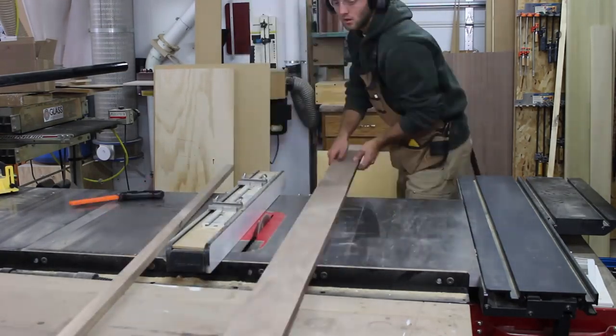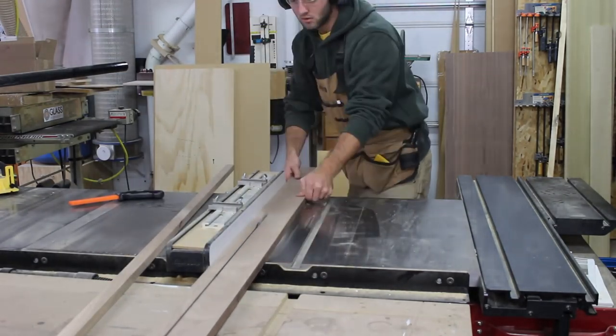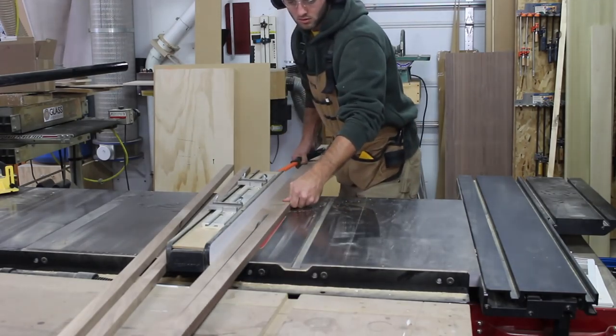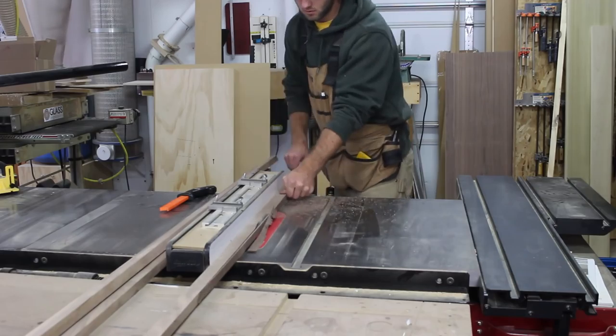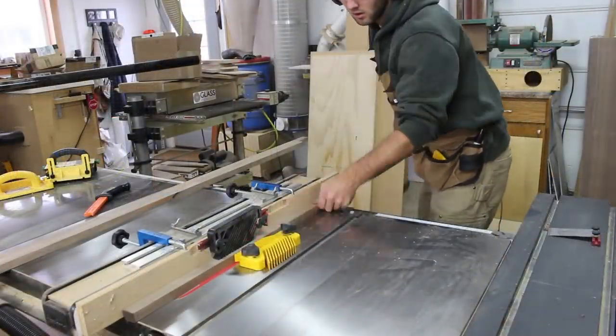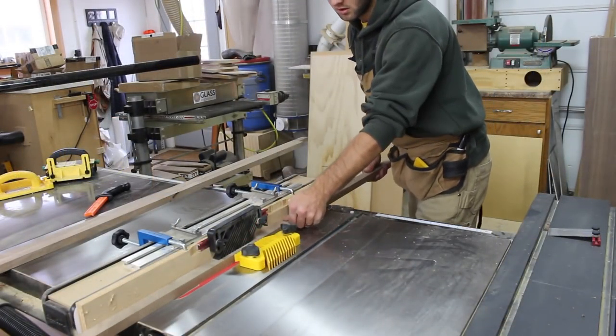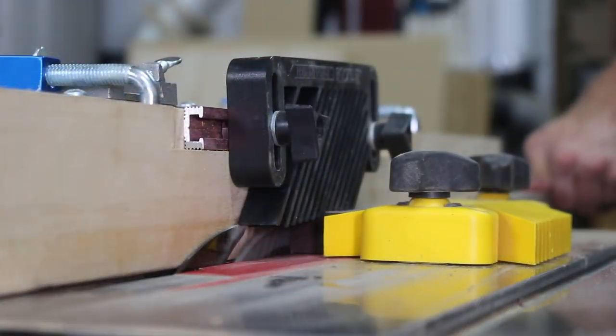I'm going to wrap both sections with matching walnut. I rip these sections to width at the table saw. I mill a rabbet at the table saw. This will allow the molding to wrap around the panel and sit a bit proud. I think it adds a nice shadow line.